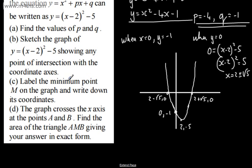In part C, we need to label the minimum point M on the graph and write down its coordinates. So that is M just here, and we've got 2, -5.